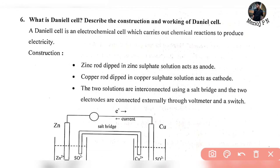The definition is very simple. The Daniel cell is an electrochemical cell which carries out a chemical reaction to produce electricity — that is, it converts chemical energy into electrical energy. The Daniel cell is an electrochemical cell which carries out chemical reactions to produce electricity.